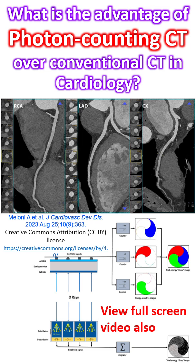The semiconductor layer is made of cadmium telluride, cadmium zinc telluride, or silicon, and has a large area cathode on the upper side. The lower side has pixelated anode electrodes. A high voltage in the range of 800 to 1000 volts is applied between the cathode and anodes to create a strong electric field.